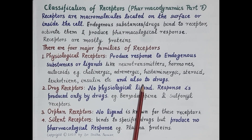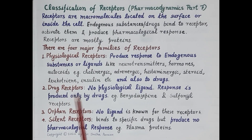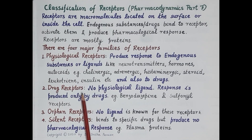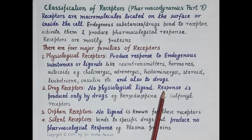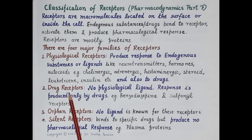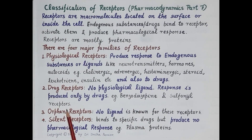Some common examples of physiological receptors are cholinergic receptors, adrenergic receptors, histaminergic receptors, steroidal receptors, leukotriene receptors, and insulin receptors. Endogenous substances as well as drugs bind to these receptors. The majority of receptors are physiological receptors. The second family are the drug receptors, for which there is no physiological ligand — no endogenous substance can bind to them to produce a pharmacological response.